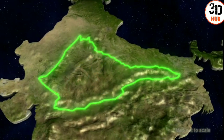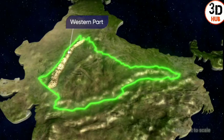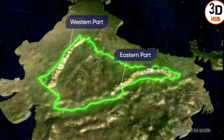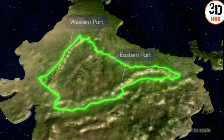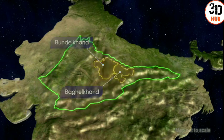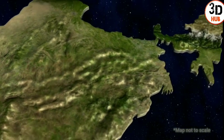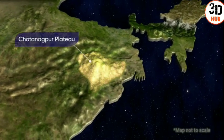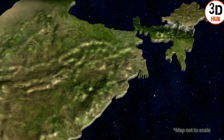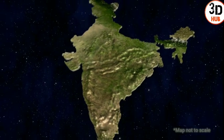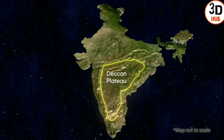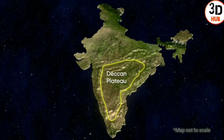The movement of the water indicates the slope of the plateau. When it comes to the width of the Central Highlands, its western part is wider than its eastern part. Its eastern extension is known locally as the Bundelkhand and Baghelkhand. Moving further to the east, we can find the Chota Nagpur Plateau, drained by the Damodar river.